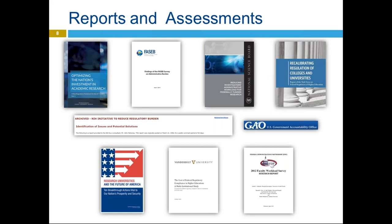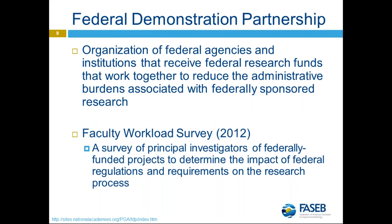We are optimistic that the community is at the point that the need for action is recognized by everyone. This was pointed out with the help of the Workload Survey by the Federal Demonstration Partnership. The Federal Demonstration Partnership is an organization of federal agencies and institutions that receive federal research funds. Agency representatives, research administrators from research institutions, and faculty work together to reduce administrative burdens associated with federally sponsored research. The faculty workload survey in 2012 was the second survey the FDP conducted. The first survey in 2005 was of over 6,000 federally funded investigators. The 2012 survey polled over 12,000 investigators, with the goal to determine the impact of federal regulations and requirements on the research process.